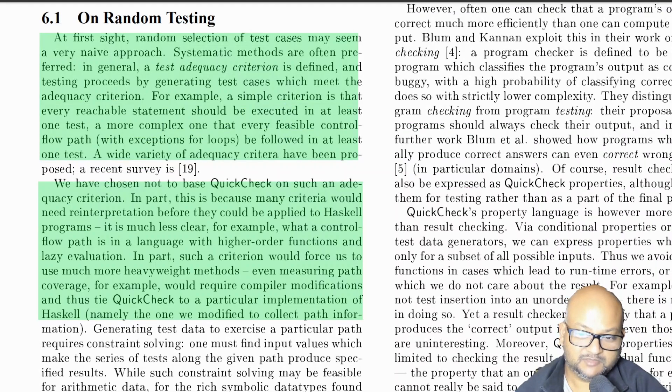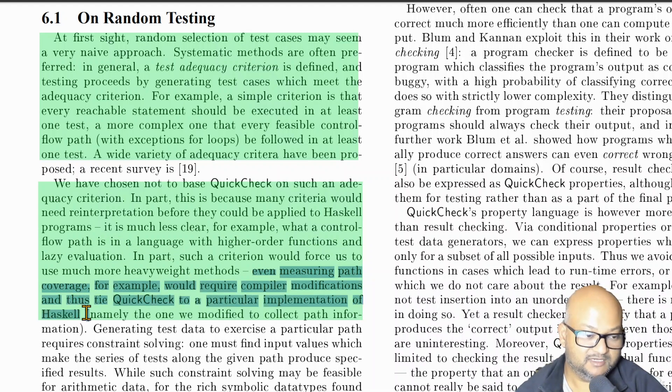The authors wrap up the paper with some thoughts on random testing, as opposed to more systematic testing that looks at the control flow of the code under test and why they went with random testing. One reason, of course, is that more systematic testing would be much more complex. But also, in a language like Haskell, which uses higher order functions and lazy evaluation, it's not even clear how you would define that kind of testing. It would need some very deep instrumentation at the level of the compiler. And then QuickCheck would have to be tied to a particular implementation of Haskell.